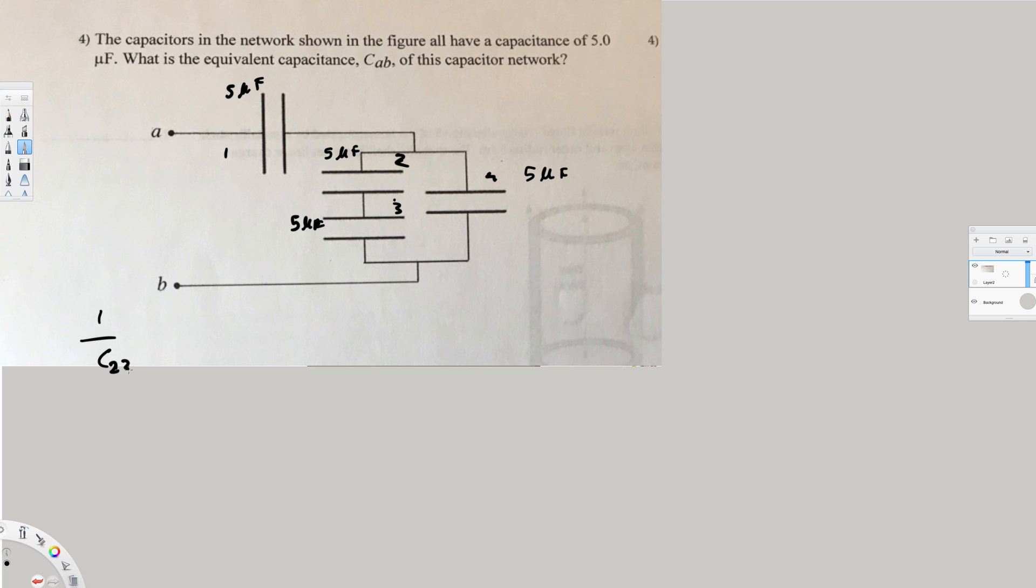This is C23. So 1/C23 is going to be equal to 1/5 plus 1/5, which is 2/5. Therefore C23 equals 5/2, which equals 2.5 microfarads.